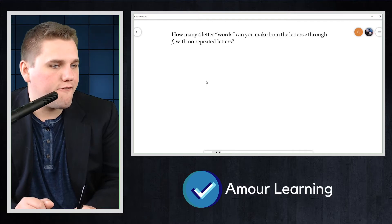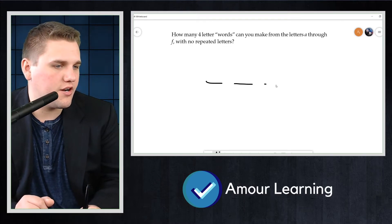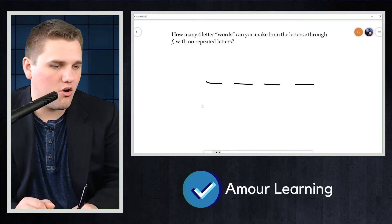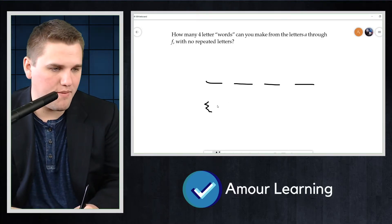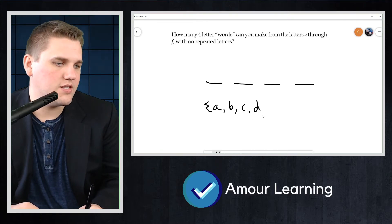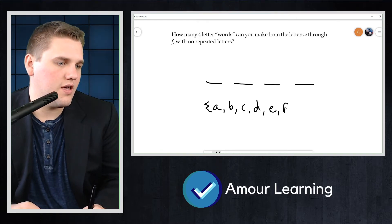There are four letters here that we're choosing and we're using A through F. So our set here that we're picking from is A, B, C, D, E, and F.